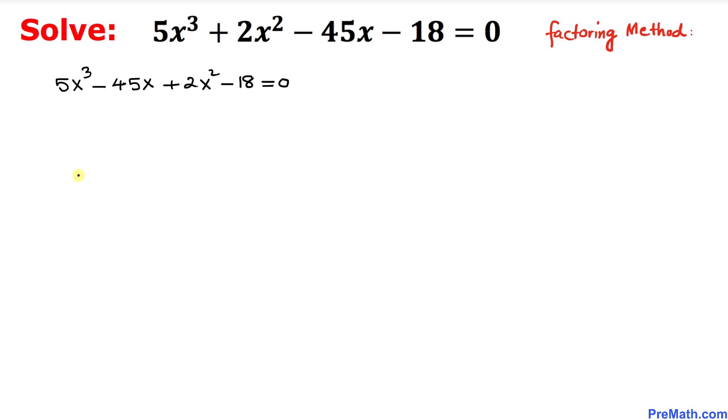Between these first two terms we can see that 5x could be factored out. Once we factor out 5x, we're going to end up with x² - 9 inside the parentheses.